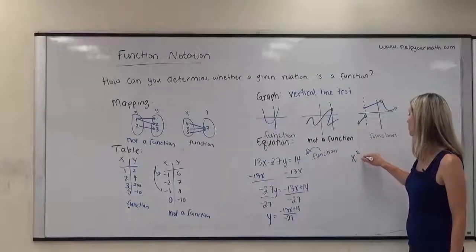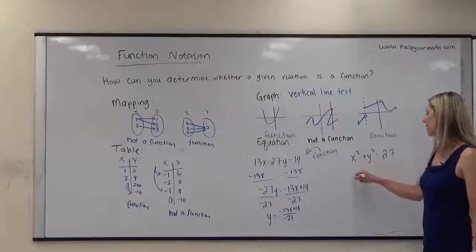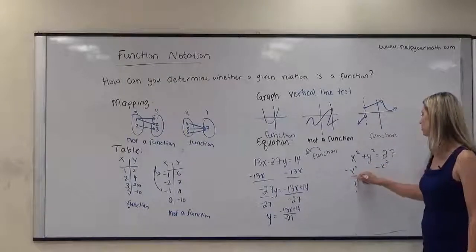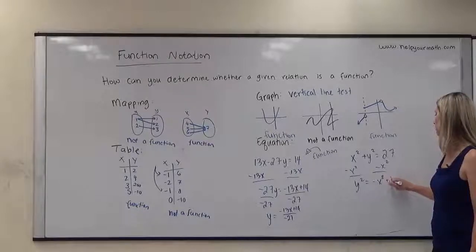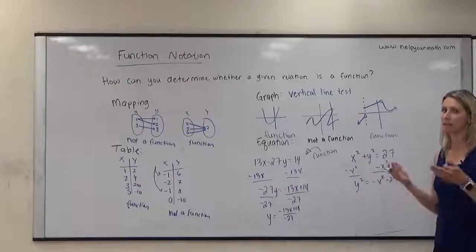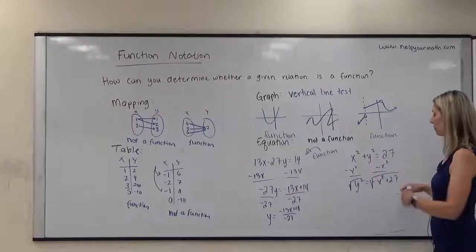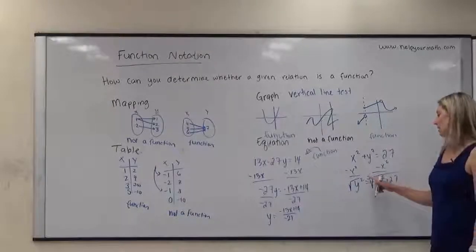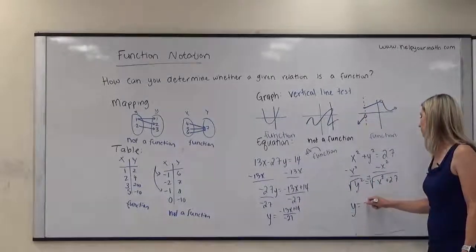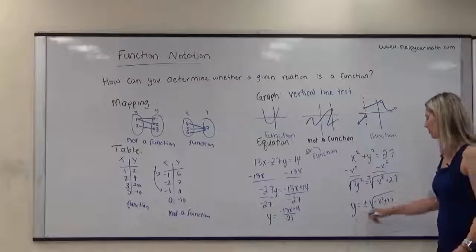An example of something complicated to isolate y from: if I have x squared plus y squared equals 27, I subtract x squared from both sides to get y squared equals negative x squared plus 27. But here's the weird part — to get y by itself, I have to take the square root of both sides, and when I do that I must include a plus or minus. If you have to include a plus or minus, you're probably not dealing with a function. So y equals plus or minus the square root of negative x squared plus 27. This is awkward — this is not a function.